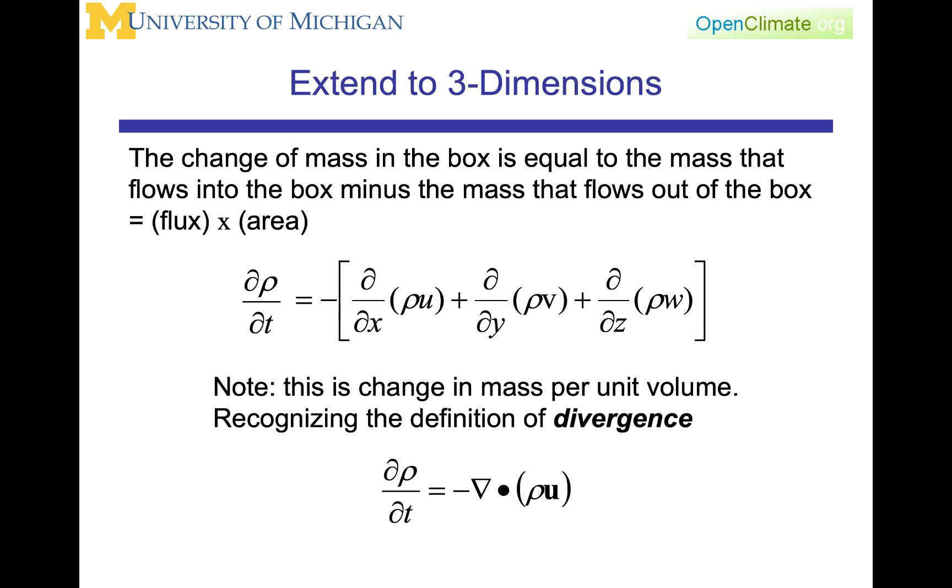We are then going to do the exact same calculation in the y direction and in the z direction, recognizing that the flux in the y direction will be rho v, the flux in the z direction will be rho w. After we take the difference of the masses in and the masses out, we will recognize that as the partial of rho with respect to t within the box, so the local change of density within the box. And what that is equal to is minus del dot rho u, or the divergence of the mass flux. You will see this sort of equation again and again, where you are going to see the local time rate of change of a quantity is going to be related to the divergence of a flux.